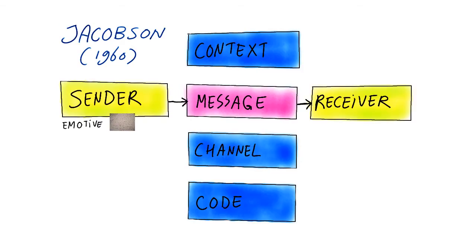The second function is conative, if a receiver is directly addressed to do something specific. An example is a commercial that tells us to buy this flavor of ice cream.